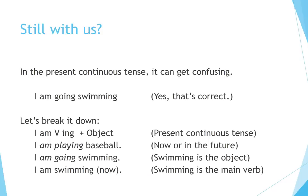In the present continuous tense, it can get confusing. 'I am going swimming' — yes, that's correct. Let's break it down: I am + verb-ing + object (present continuous tense). 'I am playing baseball' — now or in the future. 'I am going swimming' — here, swimming is the object. 'I am swimming' — in this case, swimming is the main verb.